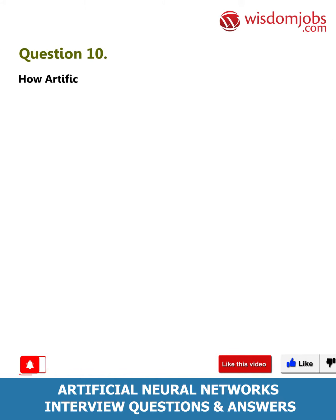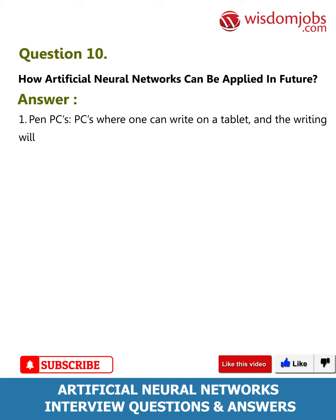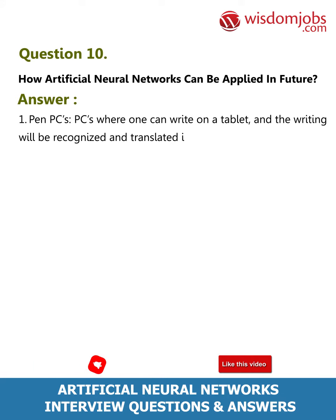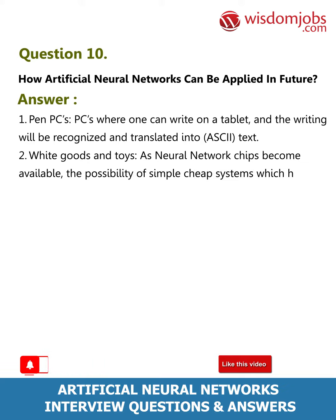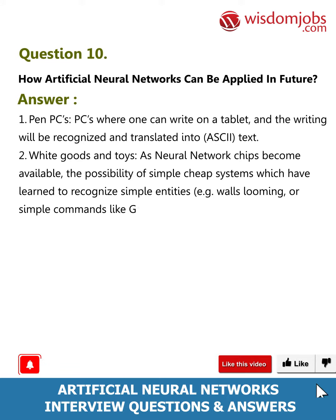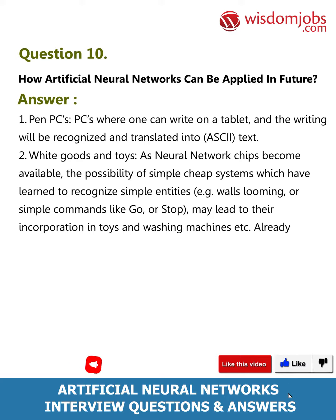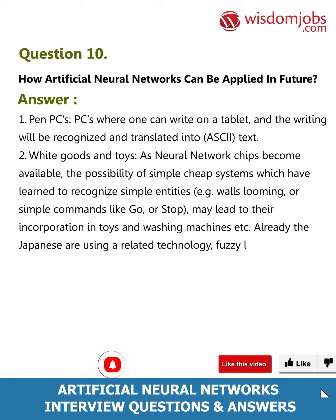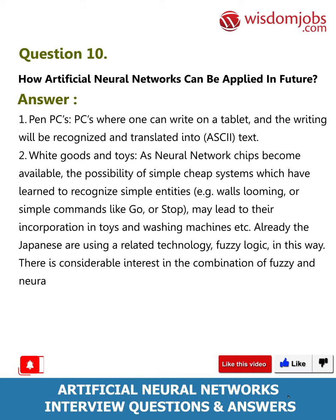Question 10: How can artificial neural networks be applied in the future? First, pen PCs: PCs where one can write on a tablet and the writing will be recognized and translated into ASCII text. Second, white goods and toys: as neural network chips become available, simple cheap systems that have learned to recognize simple entities — such as walls looming or commands like 'go' or 'stop' — may be incorporated in toys and washing machines. The Japanese are already using related technology — fuzzy logic — and there is considerable interest in combining fuzzy and neural technologies.